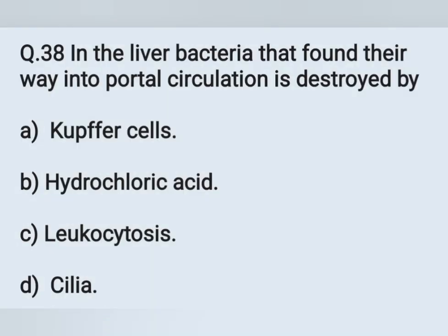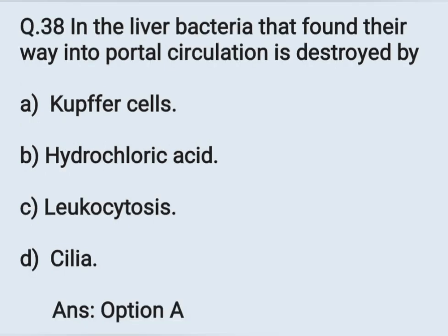Question number 38. In the liver, bacteria that find their way into portal circulation are destroyed by — Option A: Kupffer cells. Option B: Hydrochloric acid. Option C: Leukocytosis. Option D: Cilia. The correct answer is Kupffer cells, which help remove viruses, bacteria, and particular foreign bodies from the liver.